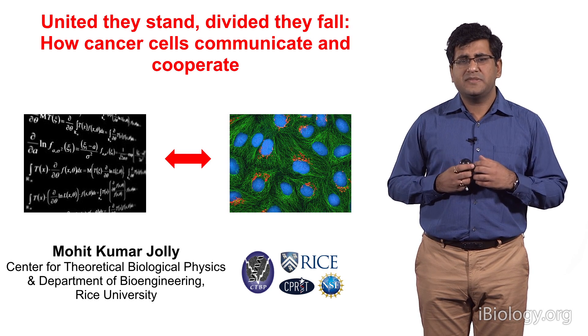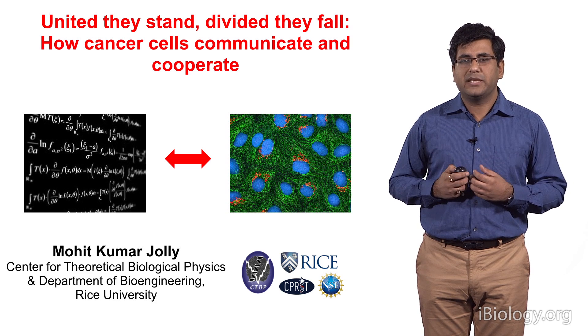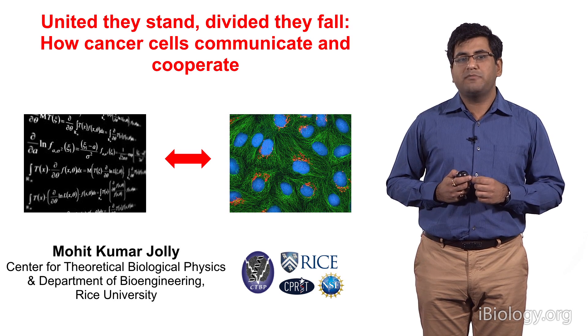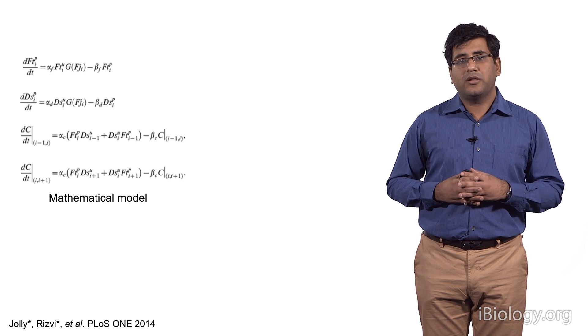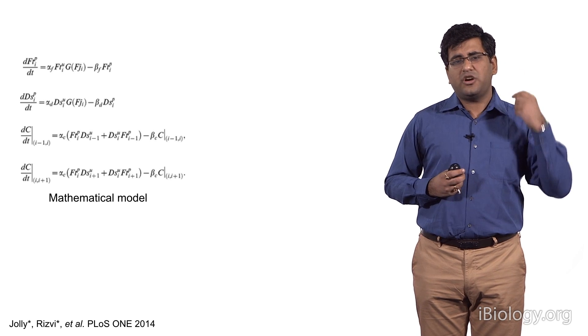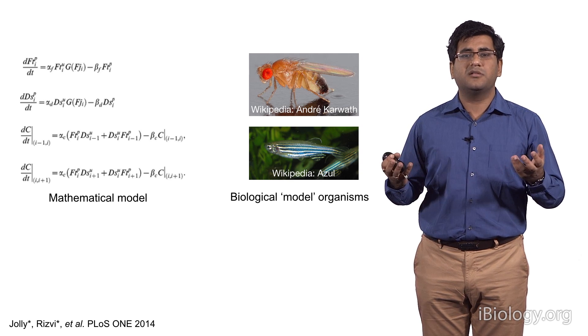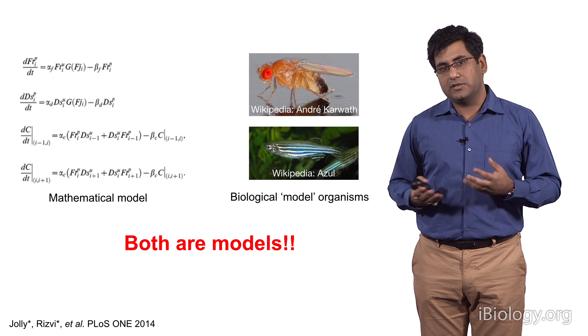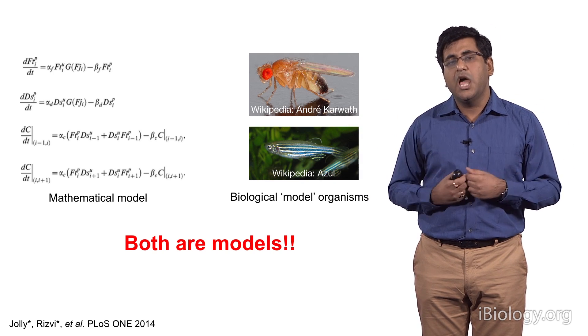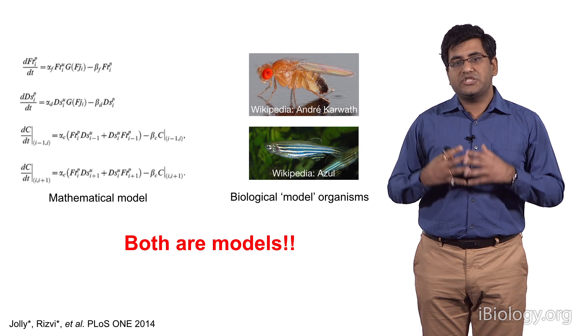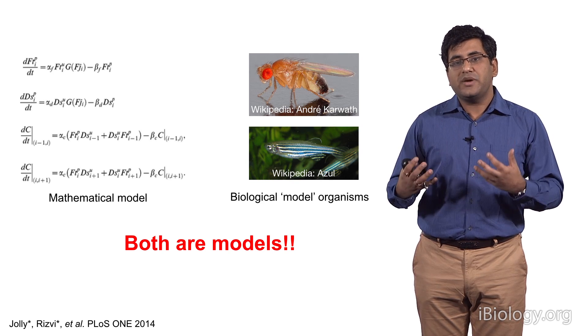Math and biology sounds like two different extremes. How did I get interested in coupling them? The point of no return came during my master's at IIT Kanpur when I was working on a mathematical model of cell polarity. I showed this model to a group of experimental biologists and they shot at me: 'This is just a model — what does it have to do with reality?' And I shot back: 'What do you study? Drosophila. That's also a model.' Both are models — one mathematical, one biological — both with their own assumptions, strengths, and limitations. Can we not couple their strengths together to produce new insights?